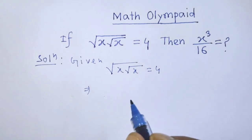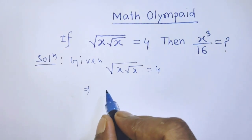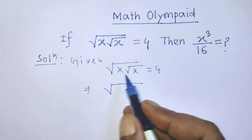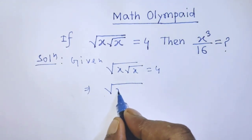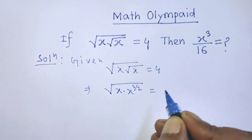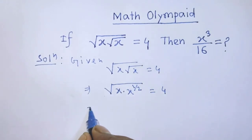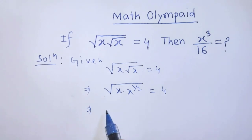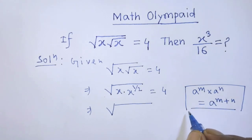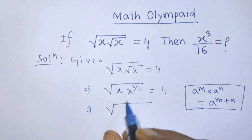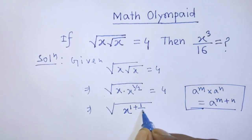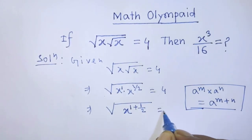In the first step of the solution, it will be square root, and under this square root it will be x times x to the power 1 over 2, is equal to 4. After that, on the left hand side again we have to write square root. According to this formula, it will be x to the power 1 plus 1 over 2, is equal to 4.